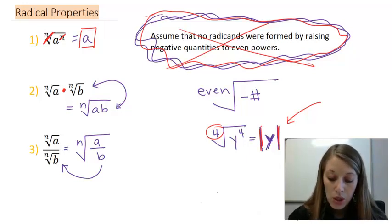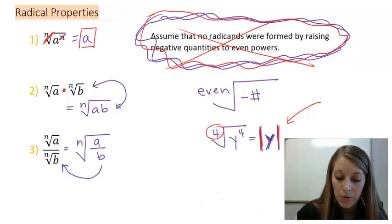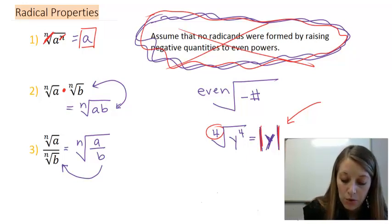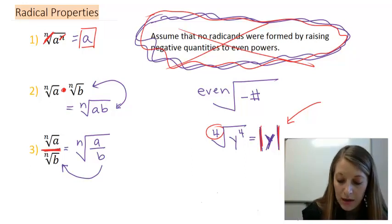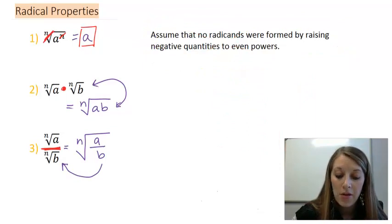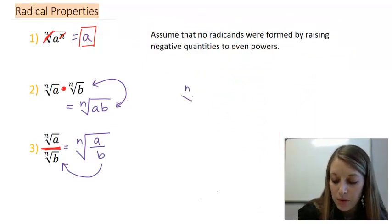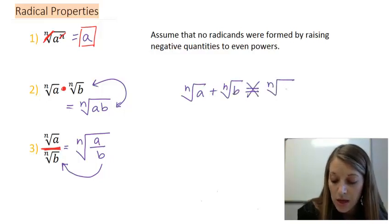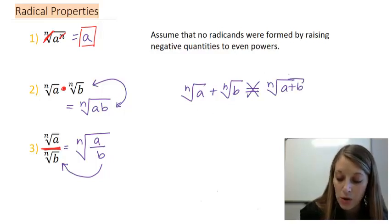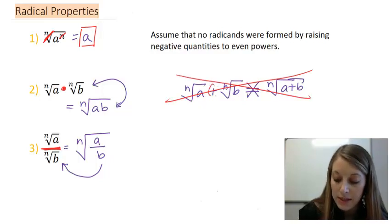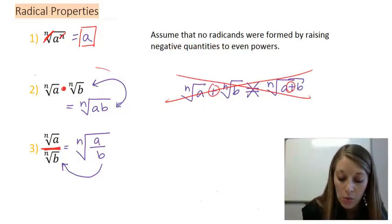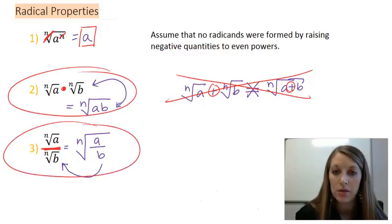Now, I do want to point out, looking at property two and property three, we can combine roots when they are multiplied and when they are divided. You will not be able to do this in other operations. For example, the nth root of a plus the nth root of b is not equivalent to the nth root of a plus b. You cannot combine these in this sort of way when it is addition or subtraction, only when it's multiplication or division.